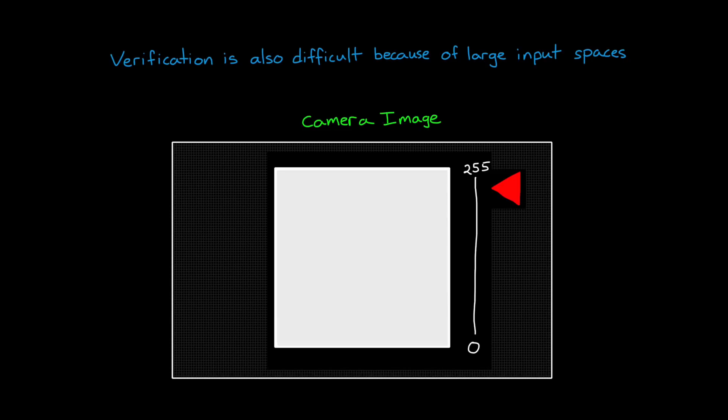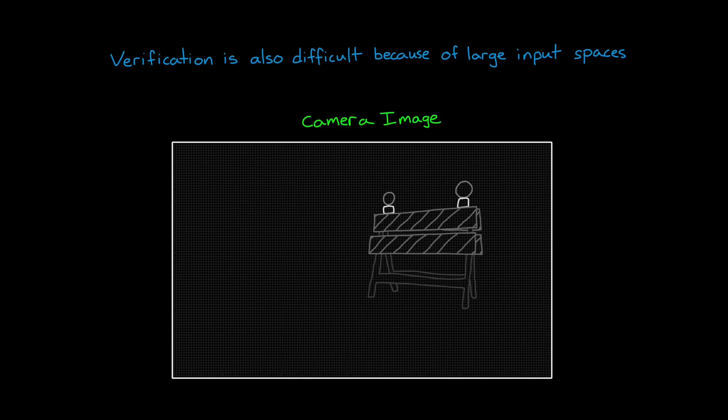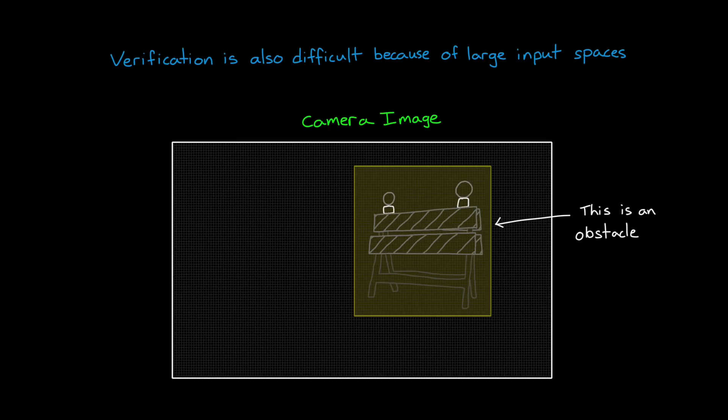And just like with the step input example, just because your network has learned to recognize an obstacle in one portion of the image, at some lighting condition and orientation, and at some scale, doesn't give you any guarantees that it works in any other way in the image.